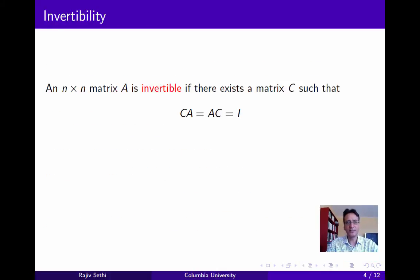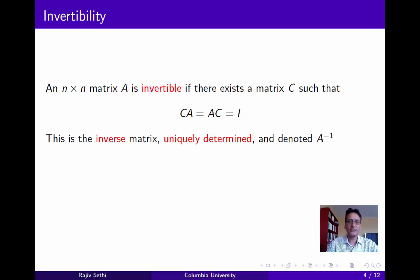Next, consider the invertibility of matrices. We say that an n by n matrix A is invertible if there exists a matrix C such that if you pre-multiply A by C or post-multiply it by C, you get the identity matrix. If there exists such a matrix C, we call it the inverse matrix, and it's uniquely determined and denoted as shown on the slide. And if a matrix is not invertible, we say that it's singular.